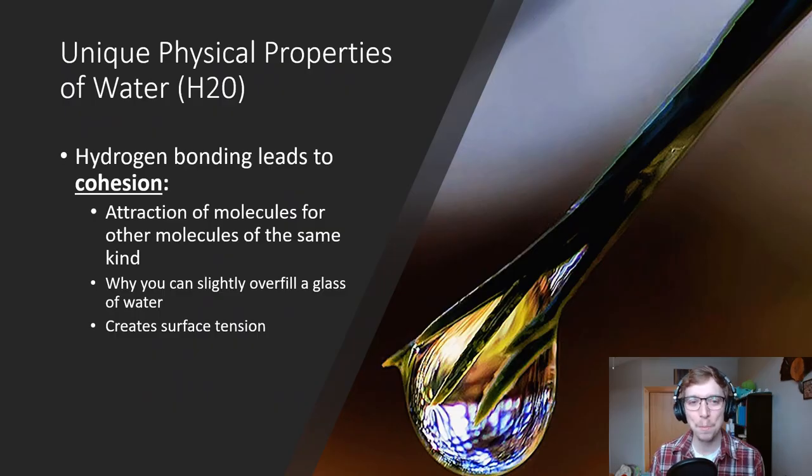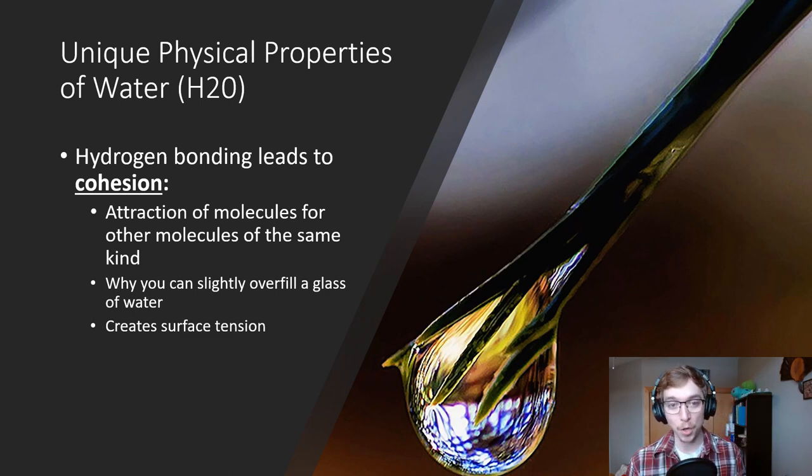Continuing on some of these unique physical properties: hydrogen bonding leads to what we call cohesion. That's basically just the attraction of molecules for other molecules of the same kind. Water molecules, if you have two drops that are really close together, they'll bead and form together as they move about a surface. It's why you can slightly overfill a glass and you get that little bubble over top of the rim. That's what we call surface tension.